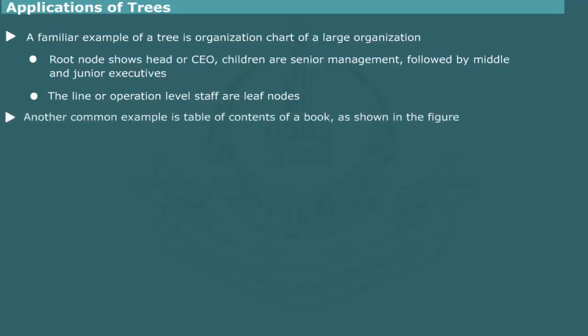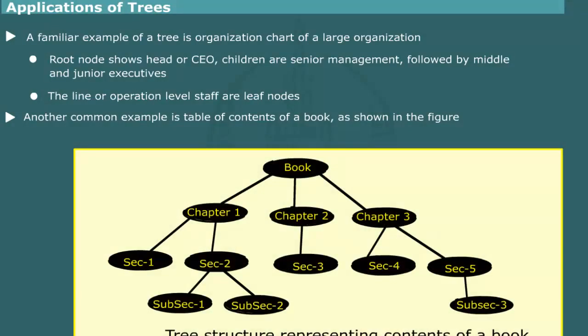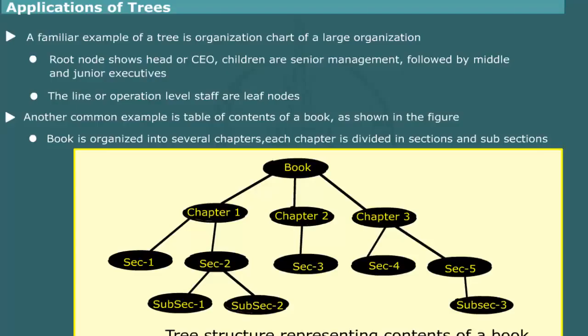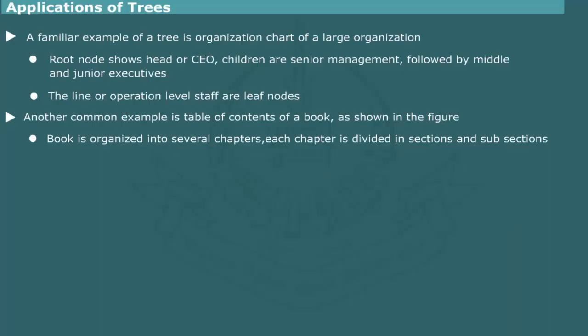Another common example of tree data structure is table of contents of a book or a document as shown in figure. The title of book is at the root. The book is generally organized into several chapters. Each chapter may be further organized into sections, and the sections may in turn be divided into subsections. Using one of the tree algorithms, we can print the table of contents of the book with chapters, sections, and subsections appropriately indented as shown.